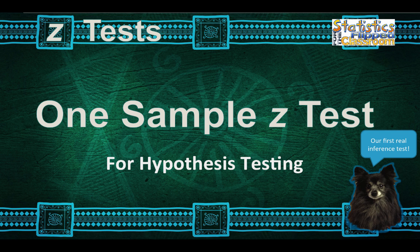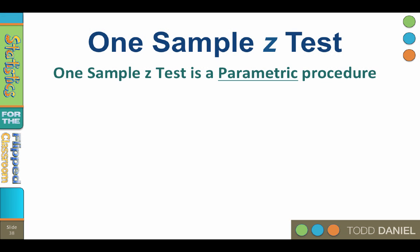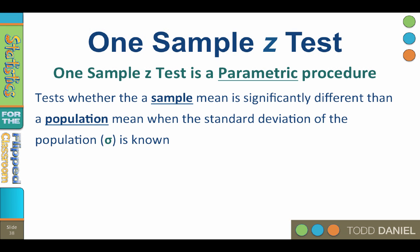Now it is time for our first real inference test. We're going to learn to use a one-sample z-test for hypothesis testing. The one-sample z-test is a parametric procedure. It tests whether a sample mean is statistically significantly different than the population mean when the standard deviation of the population, or sigma, is known.